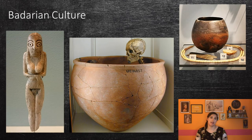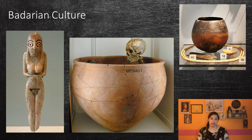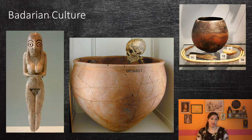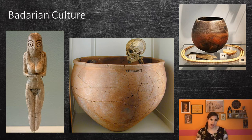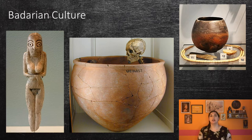The first culture we're going to talk about is the Badarian culture, dating from 4500 to 4000 BCE. These people had the first evidence of agriculture in Egypt, as they farmed wheat, barley, and herbs. They also hunted animals and had domesticated animals which provided both food and clothing material. Around 40 settlements have been found dating to this period, as well as 600 graves discovered around the modern city of El-Badari in Middle Egypt. The people of this culture made jewelry out of copper, ivory, and quartz, and may have even traded for turquoise from the Sinai Peninsula.